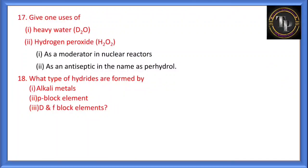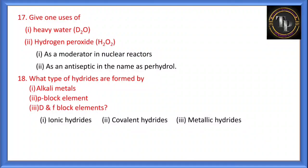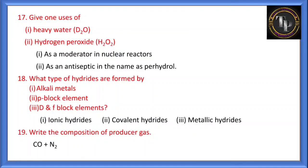What type of hydrides are formed by alkali metals? Alkali metals usually form ionic hydrides. P-block elements form covalent hydrides. D-block and f-block elements form metallic hydrides. What is the composition of producer gas? Water gas is CO + H2, and producer gas is CO + N2. Remember: water gas = CO + H2, producer gas = CO + N2.